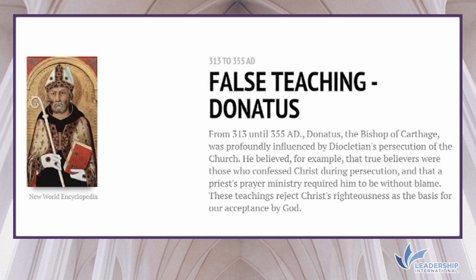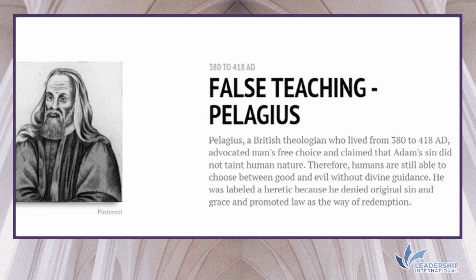From 313 to 355 AD, Donatus, the Bishop of Carthage, was profoundly influenced by the Diocletian persecution of the church. He believed that true believers were those who confessed Christ during persecution, and that the priest's prayer ministry required him to be without blame — teachings that reject Christ's righteousness as the basis for our acceptance by God. Pelagius, a British theologian who lived from 380 to 418 AD, advocated man's free choice: Adam's sin did not taint humans, so humans are still able to choose between good and evil without divine guidance. He was labelled a heretic because he denied original sin and grace and promoted law as the way of redemption.